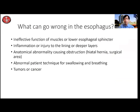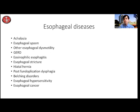What can go wrong in the esophagus? Now that we understand how it's supposed to function, let's talk about potential problems. You could have ineffective function of the muscles or the lower esophageal sphincter. You could have inflammation or injury to the lining or deeper layers. You could have an anatomic abnormality causing obstruction, such as a hiatal hernia. Tumors and cancer are also concerns. And I want to highlight abnormal patient technique for swallowing and breathing, which is an important cause of esophageal symptoms. This talk focuses on motility disorders, but it's important to understand esophageal diseases as a whole.